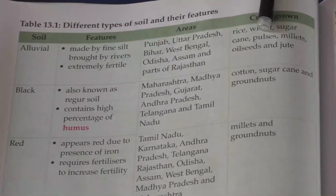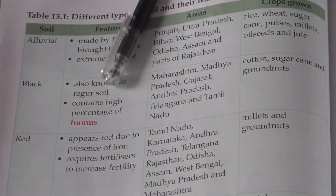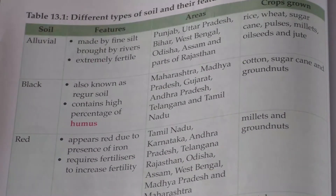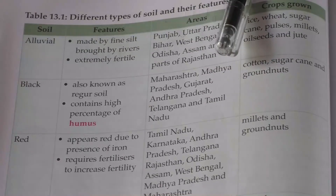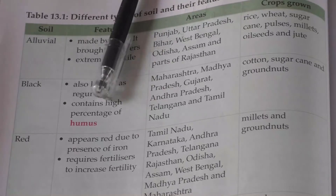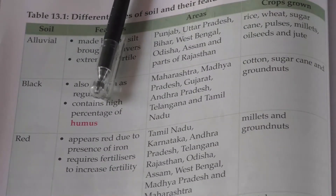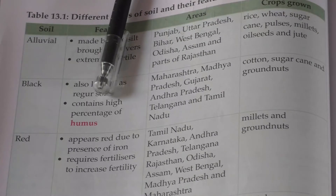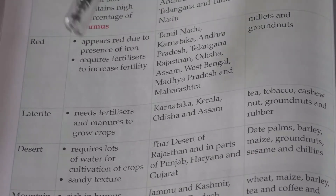The next soil is black soil. From the name itself we can identify it is black in color. Black soil is found in Maharashtra, Madhya Pradesh, Gujarat, Andhra Pradesh, Telangana, and Tamil Nadu. The soil is black in color and contains a very high percentage of humus — humus is a substance formed from dead leaves, plants, and the remains of animals — which makes the soil fertile. The soil is also rich in clay and is called regur soil.